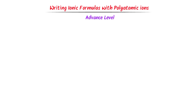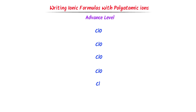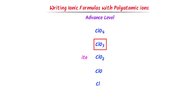Now let me teach you one more advanced concept of writing chemical formulas with polyatomic ions. I write CLO four times, and lastly one chlorine ion. I number them 4, 3, 2, 1. We start naming and numbering from the second ion — so I write ITE here. One more oxygen is present in the one above, so I write ATE. For the single chlorine, I write IDE.